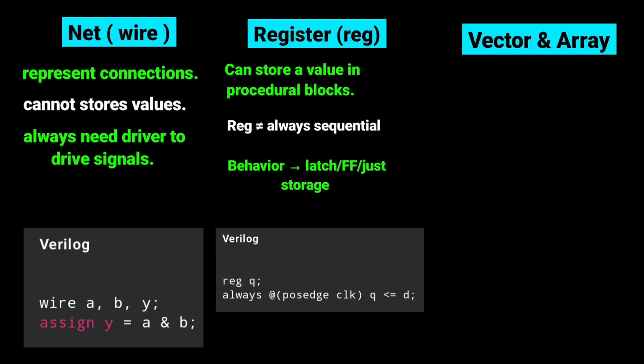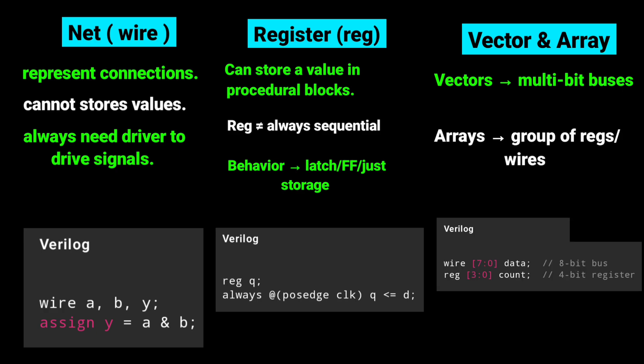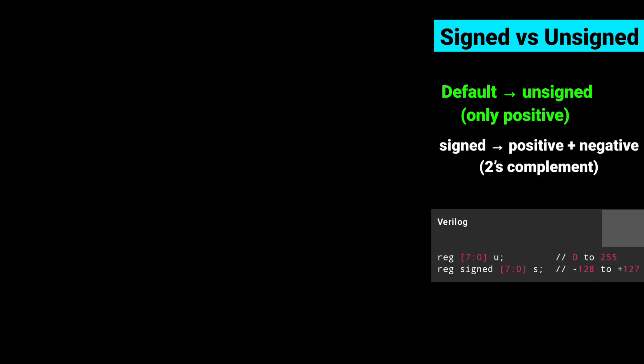Next is Vectors and Arrays. Vectors let you define multi-bit signals like buses. Arrays group multiple vectors together. Signed vs Unsigned: By default, Verilog numbers are unsigned. With signed, you can represent both positive and negative numbers.